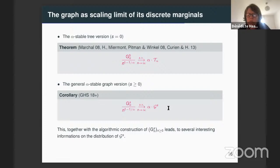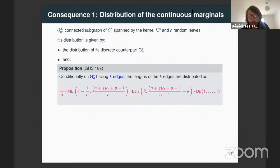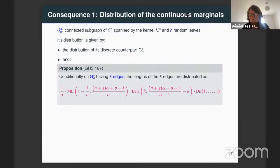So this almost sure convergence together with our description of the distribution of the discrete marginal and the algorithmic construction will give us very interesting information on the limiting graph G_S. The first consequence is that we get the distribution of the continuous marginal. The continuous marginal is given by first the discrete distribution of the discrete marginal, together with the distribution of the lengths of the edges of this discrete marginal.